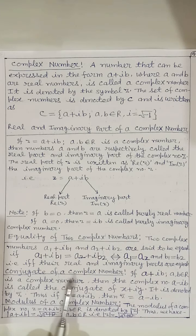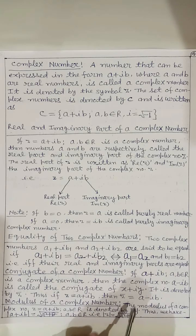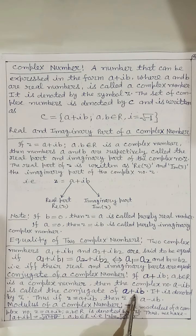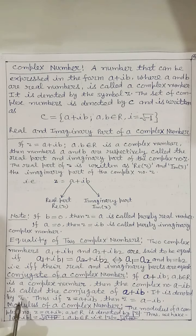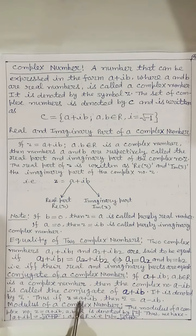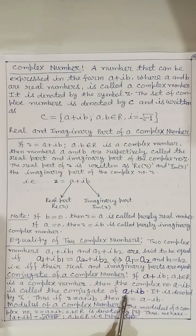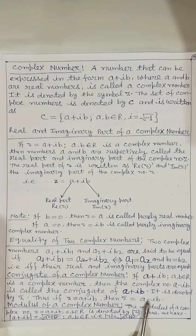Conjugate of a complex number: if z = a + ib, where a, b ∈ ℝ, is a complex number, then the complex number a − ib is called the conjugate of a + ib. It is denoted by z̄. Thus if z = a + ib, then z̄ = a − ib. Equivalently, if z has a minus sign, then z̄ has a plus sign.